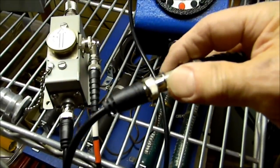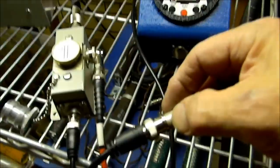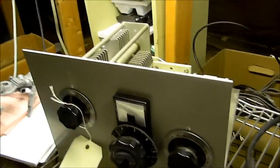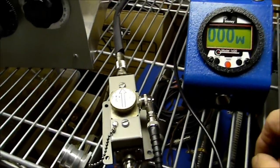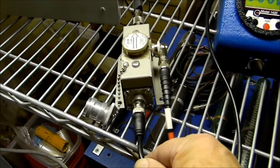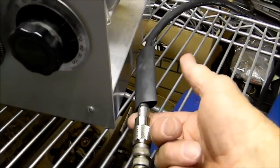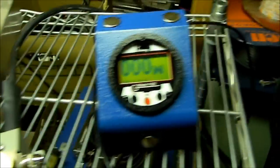This is what we just looked at. This is the power between the output of the transmitter and the input of the tuner. Now we're looking at the power between the output of the tuner and the antenna. This one goes straight to the antenna. Watch this.